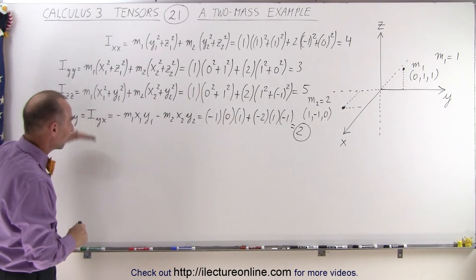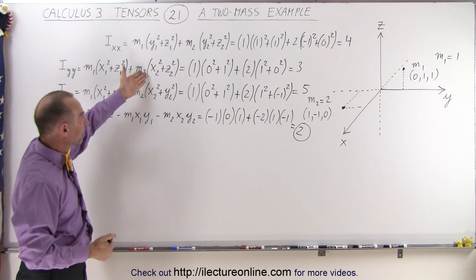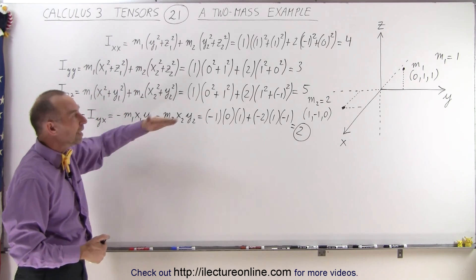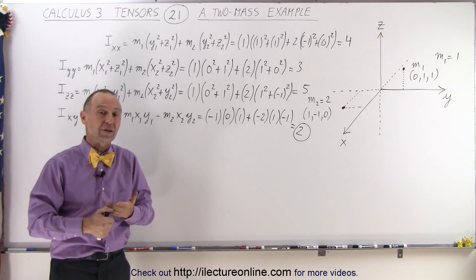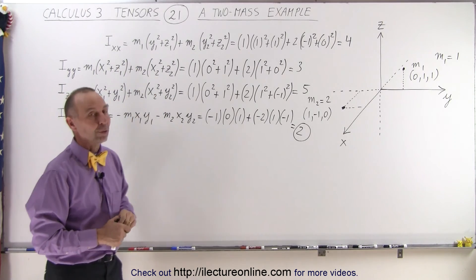Of course, we can do the same for the others. But at least now you can see how it's done, how we get the diagonal elements and the off-diagonal elements. If they're point masses, this is how you do it.